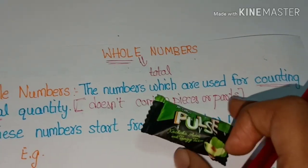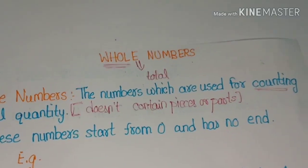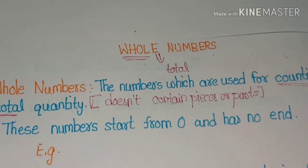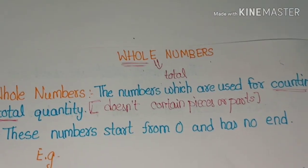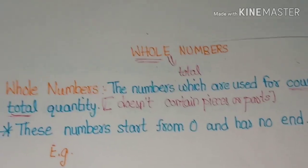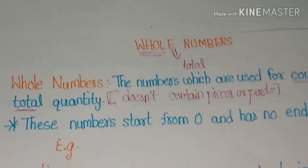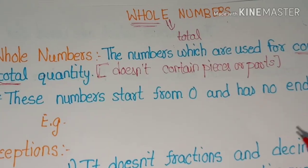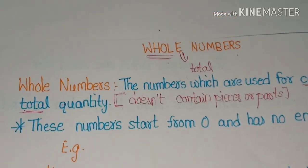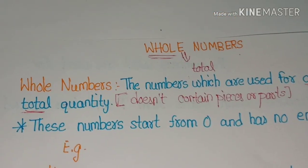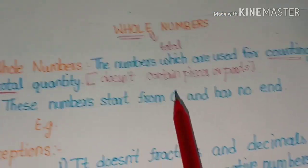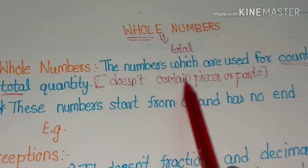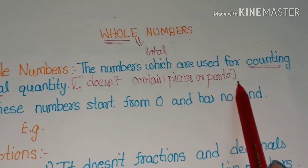Now if that last chocolate is also taken from you and someone asks how many you have, you say 0. I have 0 chocolates — it is also representing a quantity and doesn't contain pieces or parts. So 0 is also a whole number.